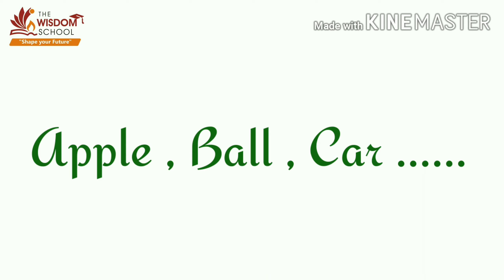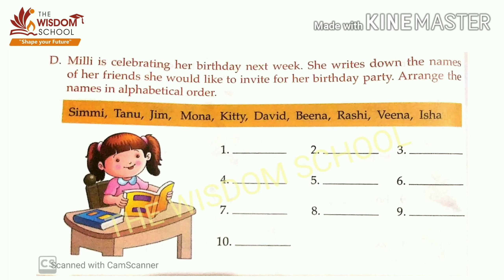Is that clear to everyone? For today, that's enough. I'll give you a small worksheet. Millie is celebrating her birthday next week and writes down the names of friends she would like to invite to her party. You have to arrange these names in alphabetical order — the name starting with A comes first, then B, then C, and so on up to Z. A worksheet will be provided with this video. Please do your homework in a neat and clean handwriting.